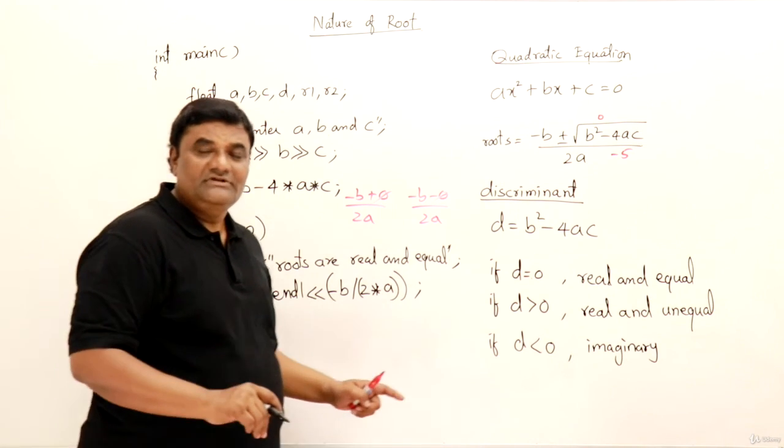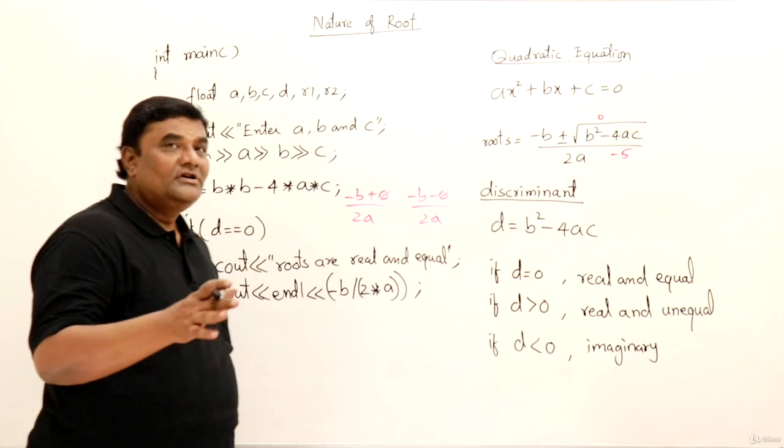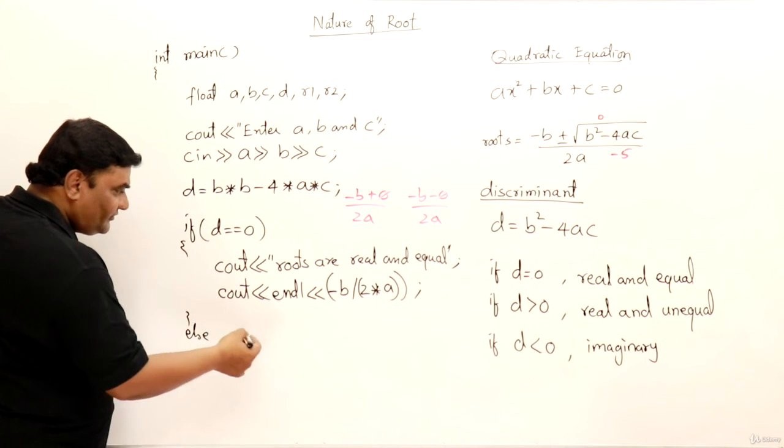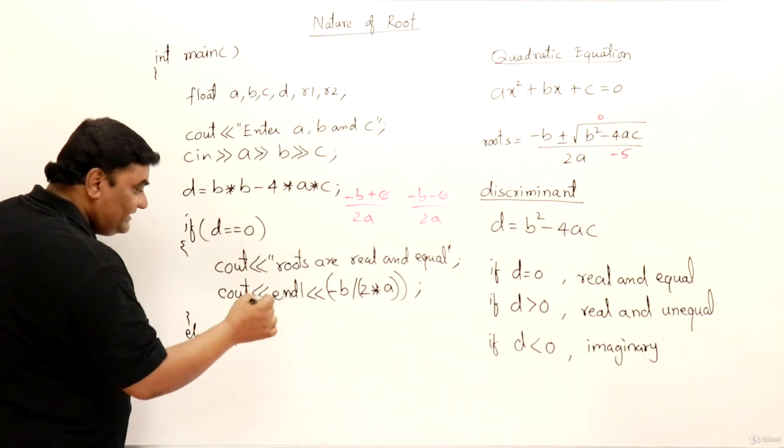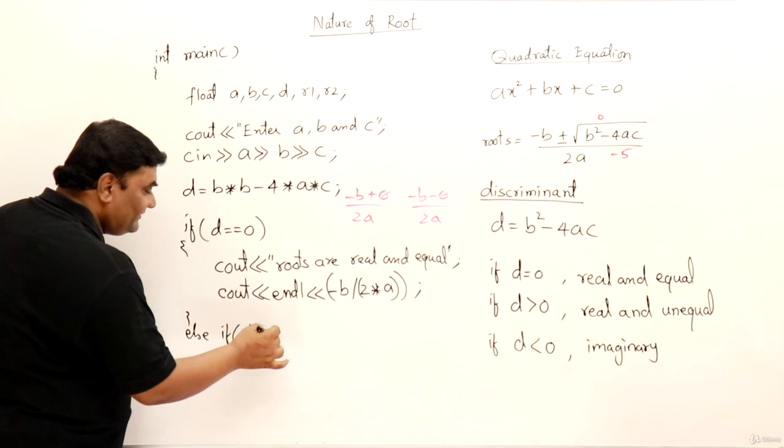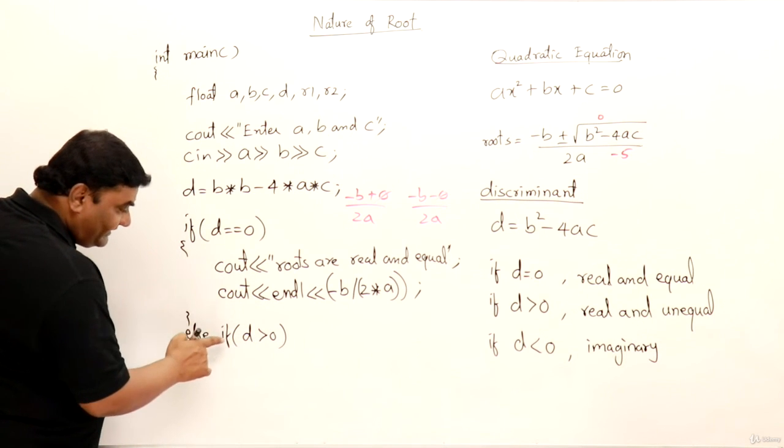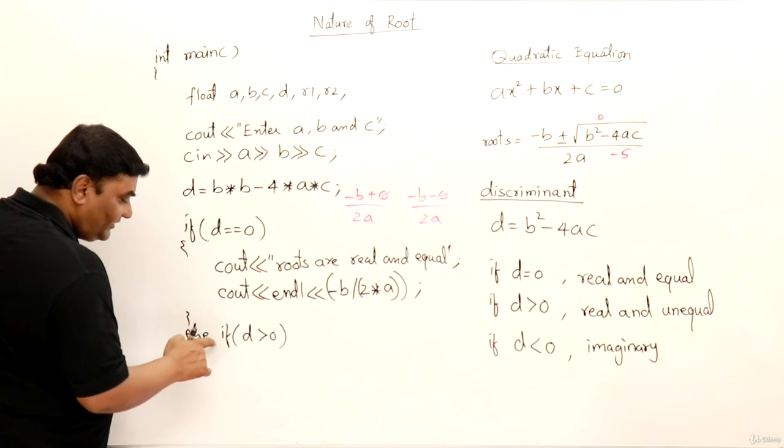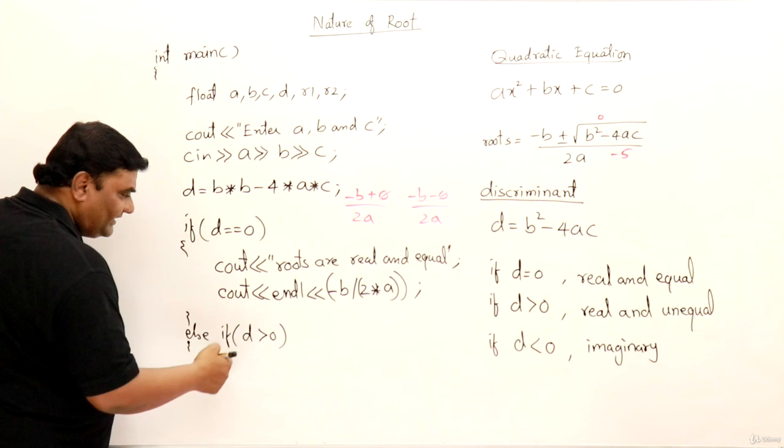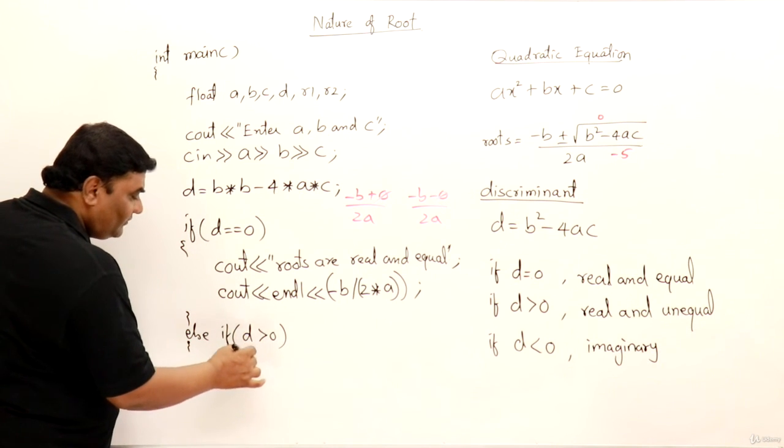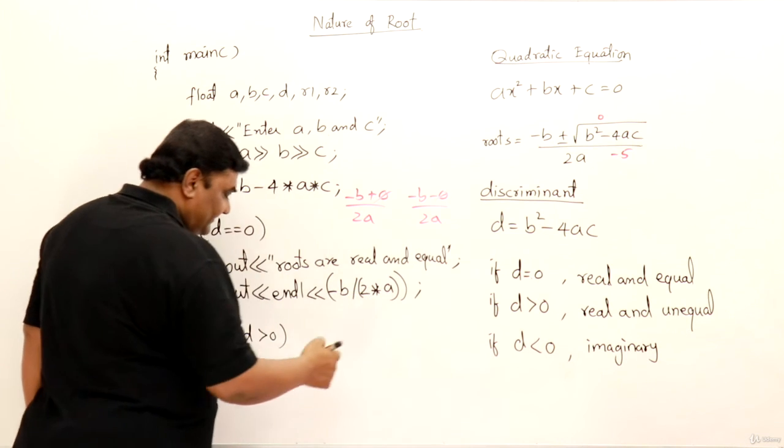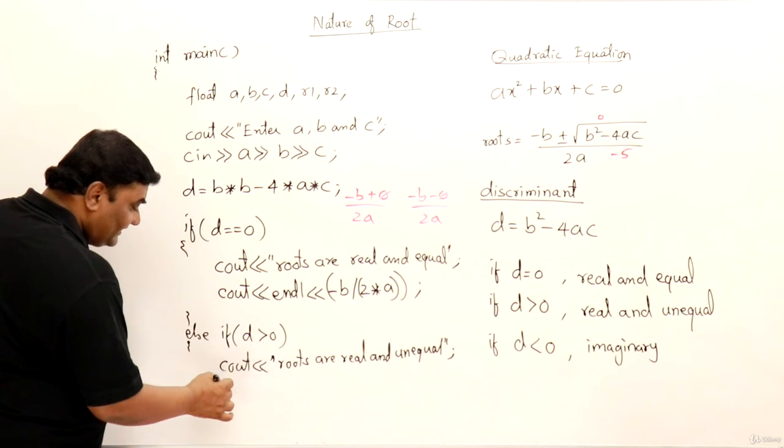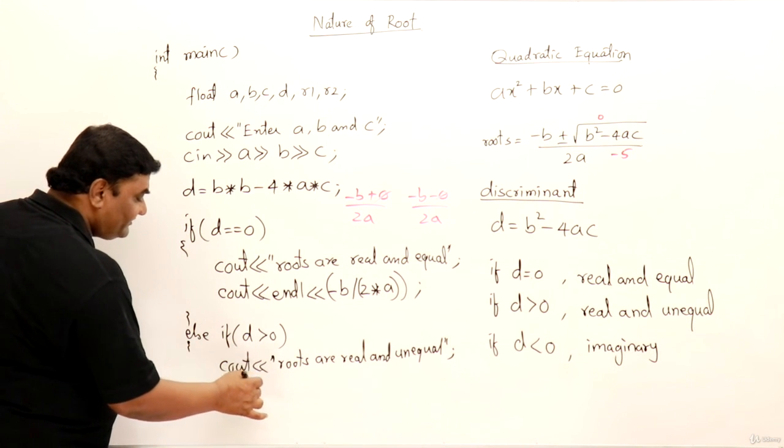If d is not 0, then what? It could be greater than 0, less than 0. So let us write for greater than 0. Else, right? So here itself I can write if d is greater than 0. So actually I can write flower bracket, but since just after else I have if, I can write it here itself. Then if d is greater than 0, then I will c out roots are real and unequal. So I will write this whole thing. Roots are real and unequal, then I will display both the roots.